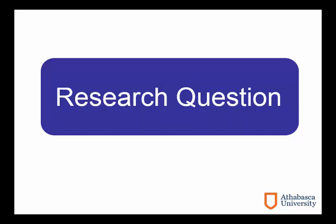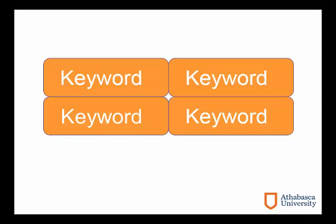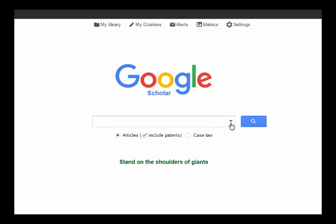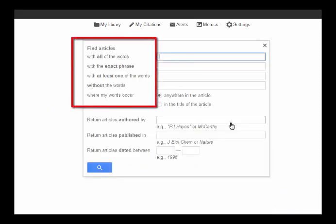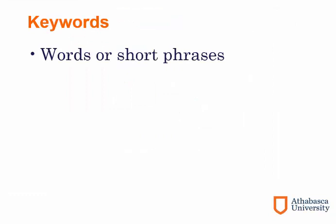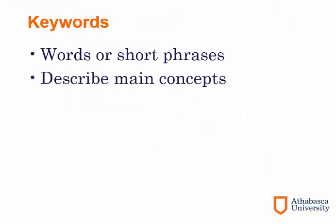When you carry out research in a database or library catalog, you will want to start with a research question, and then break that question down into searchable keywords based on the major concepts in your question. You can't simply type full sentences or questions into library databases or catalogs and expect to find useful or relevant results. Many internet search engines such as Google Scholar also require you to use searchable keywords in order to maximize the relevance of your search results. Keywords are single words or short phrases that describe the main or key concepts of your topic.